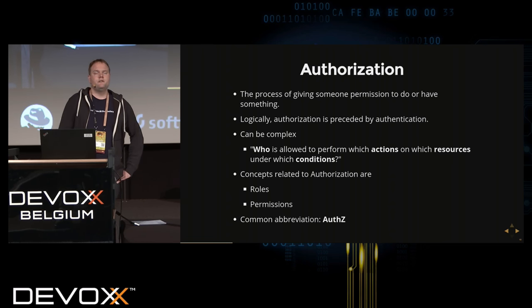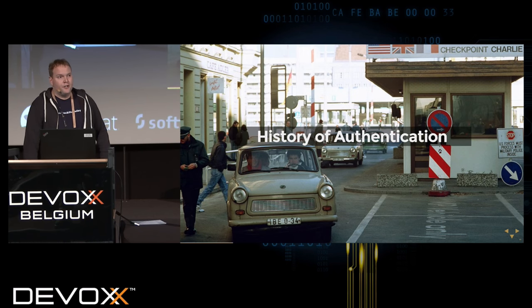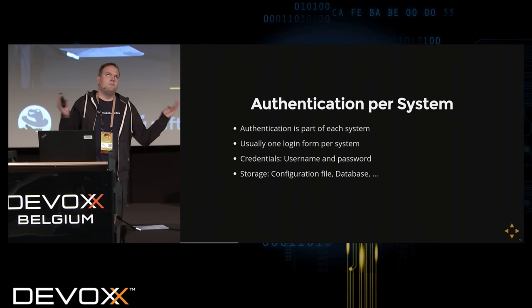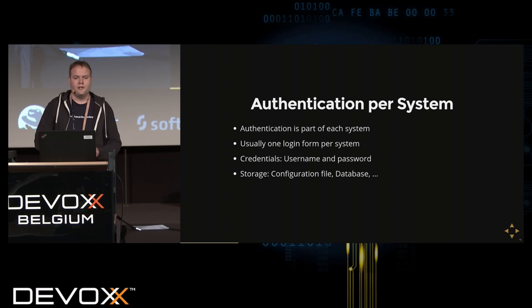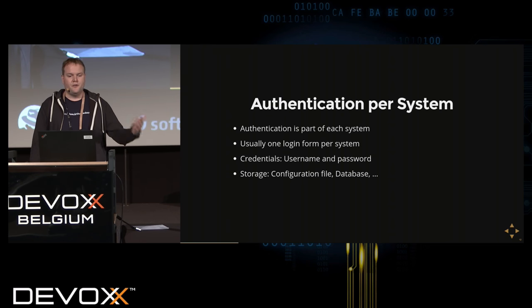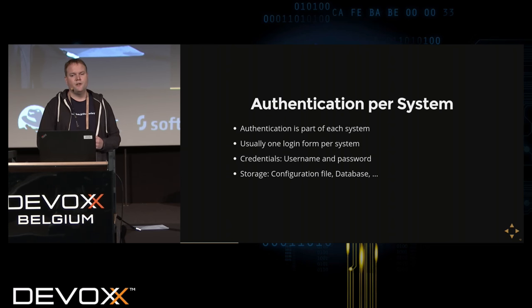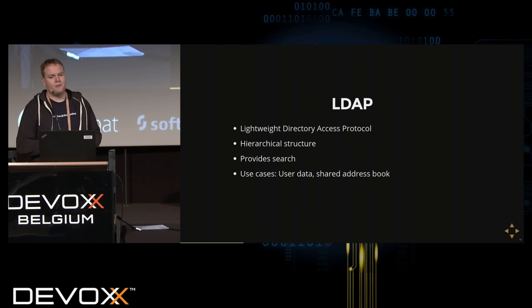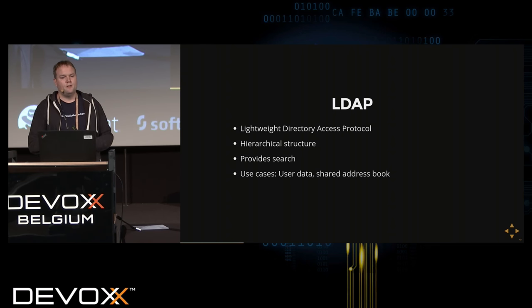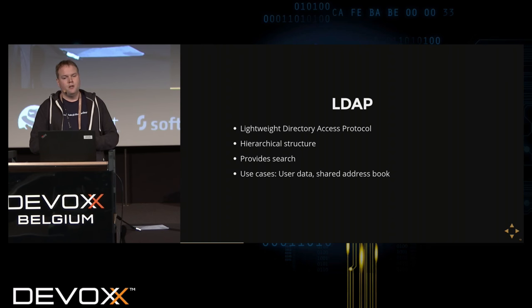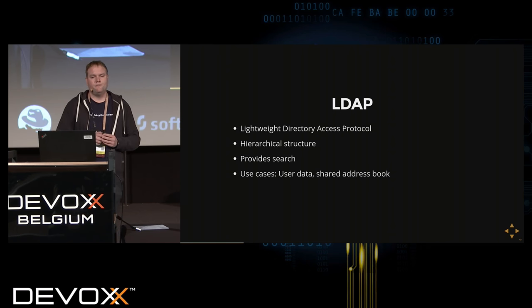A short history: about 20 years ago, each system had its own authentication process — one login form per system, each user had a username and password per system, and each system had its own database or configuration file for users. In enterprise environments this is not practical, so LDAP came in. LDAP is a hierarchical structure providing search capabilities, often used for shared address books but mainly as a storage for user data.